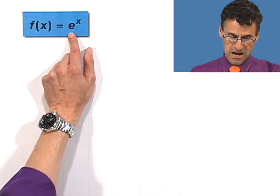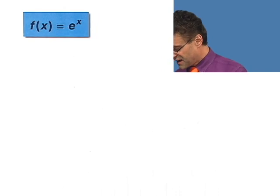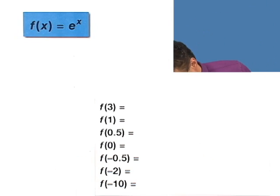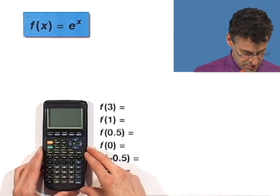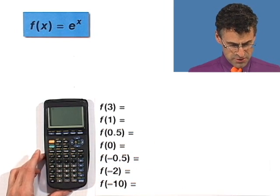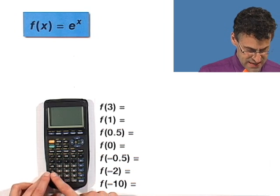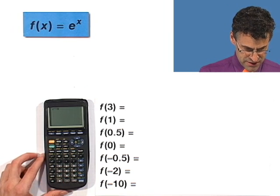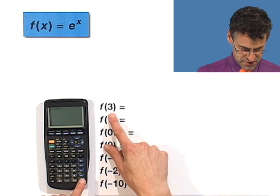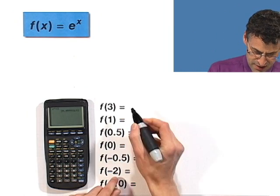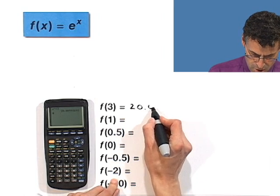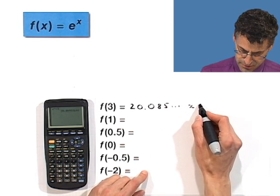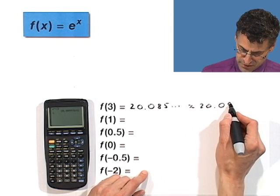So just armed with that and a scientific calculator, you can actually produce all kinds of interesting values. Take out a calculator or go online — nowadays you can find these calculators online. The way you do this is you hit the e to the x button, or sometimes it's written as exp for exponential. You hit that button, type in the value you want to evaluate — in this case 3 — and hit enter. Then you see the value, which is 20.085 and it goes on. If you want to round it off, you could round it to 20.09.